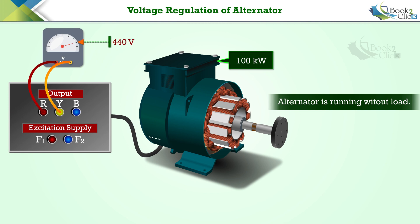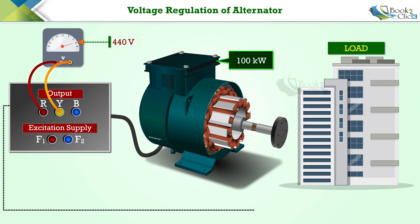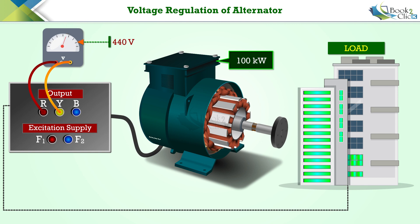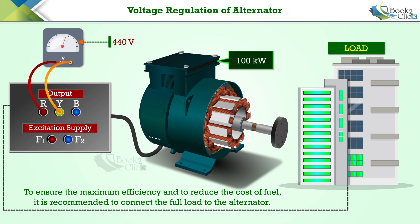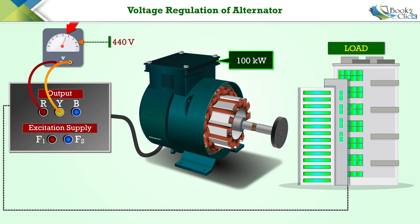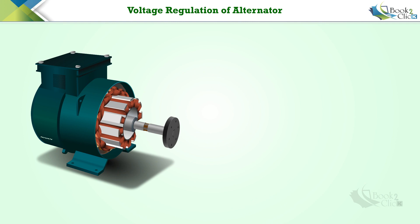At this point, the voltage available at its terminal is 440 volts. When we connect a load to this alternator, its terminal voltage will reduce. As we increase the load on the alternator, the terminal voltage will continue to decrease. To ensure that the alternator operates at maximum efficiency and to reduce the cost of fuel, it is recommended to connect the maximum load of 100 kilowatts to the alternator.